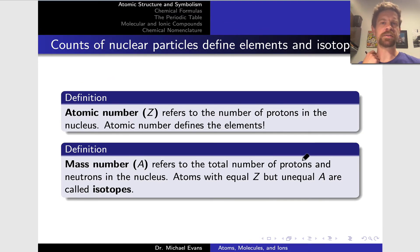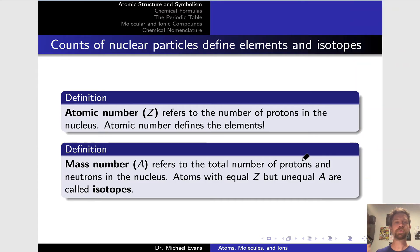One of the reasons it's so important to think about the particles within the atom is that the counts of particles inside an atom define elements, isotopes, and ions. These counts of nuclear particles are key to cataloging the elements and understanding differences between the elements at the atomic level. The most important number, I would argue, for defining an element is the atomic number Z.